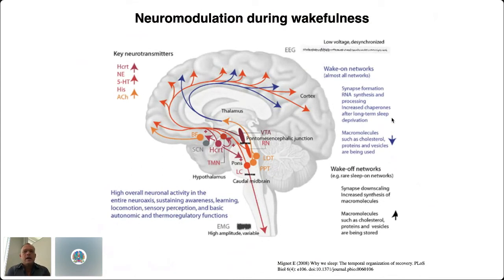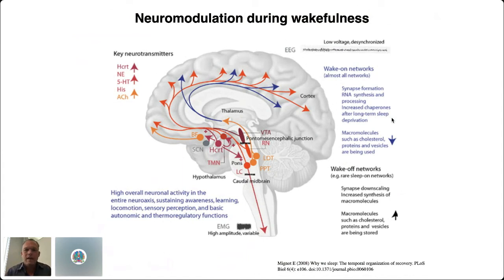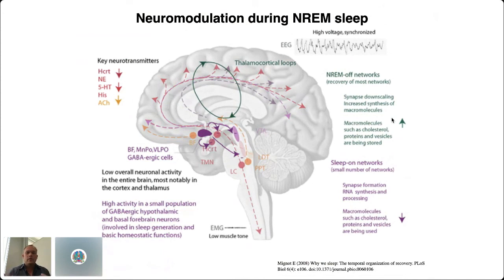Neuromodulatory influences are really responsible for keeping us awake. There are wake-on networks coming from the hypothalamus, from the midbrain reticular formation, driving thalamus and cortex with key neuromodulators — hypocretin, norepinephrine, serotonin, histamine, and acetylcholine — which are responsible for creating this sustained wakefulness period. When you go to sleep, these areas that are typically driving your wakefulness period stop firing or fire differently, and that changes the release of these neurotransmitters on the thalamus and cortex. This removal of neuromodulators underlies the non-REM sleep period.